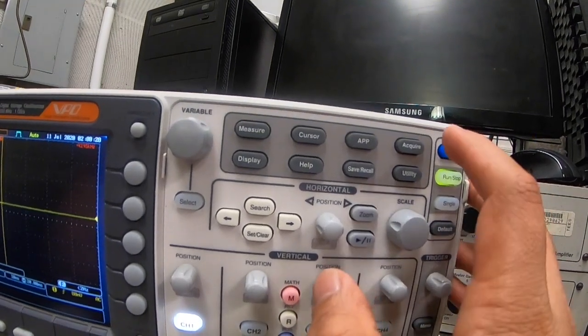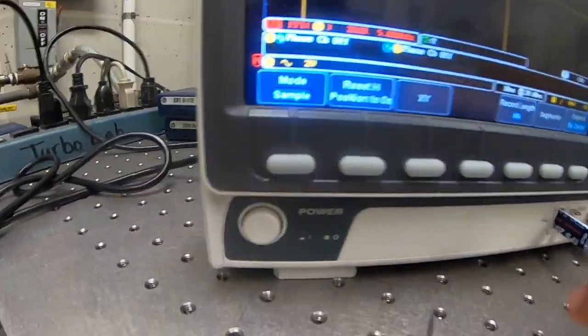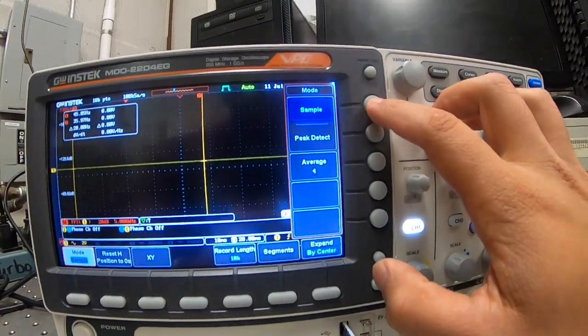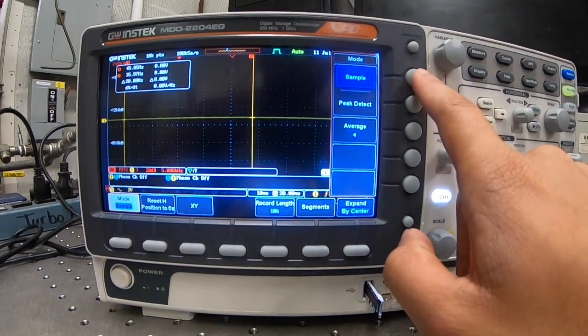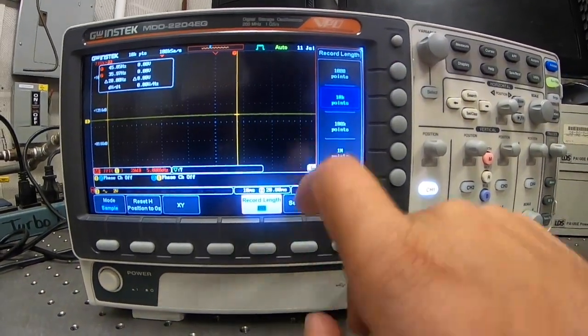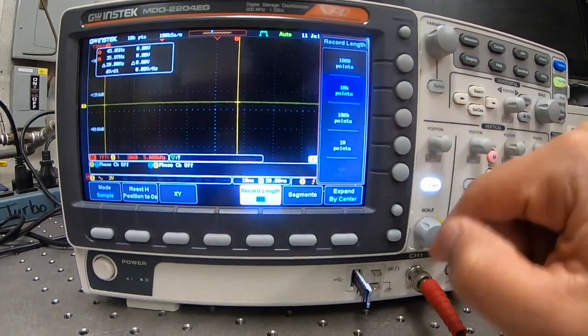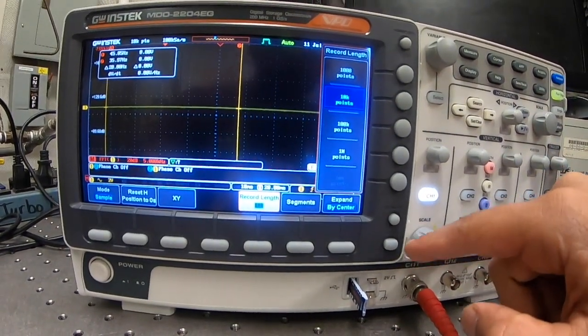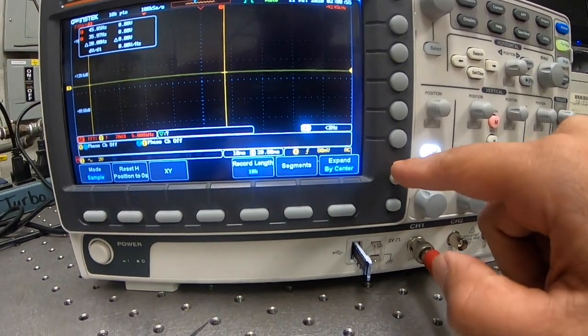If we want to change the acquisition points we can press acquire, and now it's at the sample mode and we can tell how many points we want. Here's that sample record length and we can choose a thousand, ten thousand, a hundred thousand or a million points. I consider that ten thousand is fine, so we're gonna press menu off, this round button here.